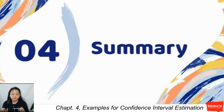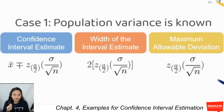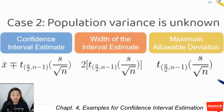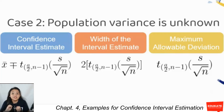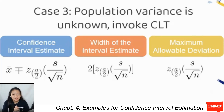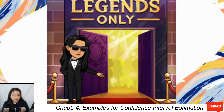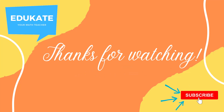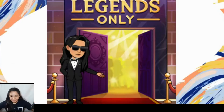As closing points: case one — population variance is known, use the z-table, and the numerator of SE is the population standard deviation. Case two — variance unknown, use the t-table, numerator of SE is s, the point estimate of the population standard deviation. Case three — variance unknown but large sample invokes CLT, use the z-table with s in the numerator. That's it for examples on confidence interval estimates — see you in the next lesson.